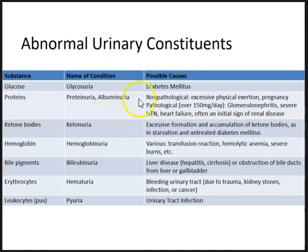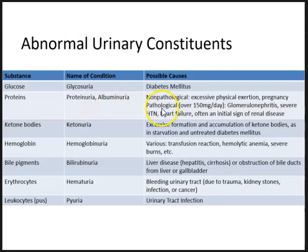Protein can appear in urine for non-pathological reasons such as excessive physical exertion, working out, or pregnancy. Protein in urine is considered pathological if over 150 mg/day, such as in glomerulonephritis — inflammation of the glomeruli — as well as severe hypertension or heart failure. Proteinuria can also be an initial sign of renal disease.